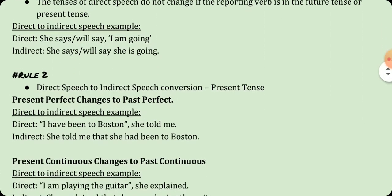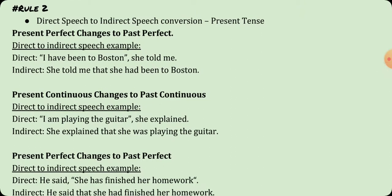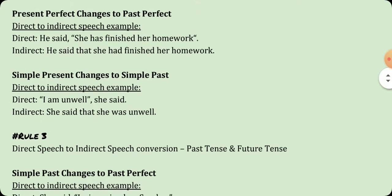The second rule is about present tense changes. Present perfect tense changes to past perfect tense. For example, 'I have been to Boston, she told me' becomes 'she told me that she had been to Boston.' Present continuous tense changes to past continuous. For example, 'I am playing the guitar, she explained' becomes 'she explained that she was playing the guitar.' Present perfect tense changes to past perfect. For example, 'He said she has finished her homework' becomes 'he said that she had finished her homework.'